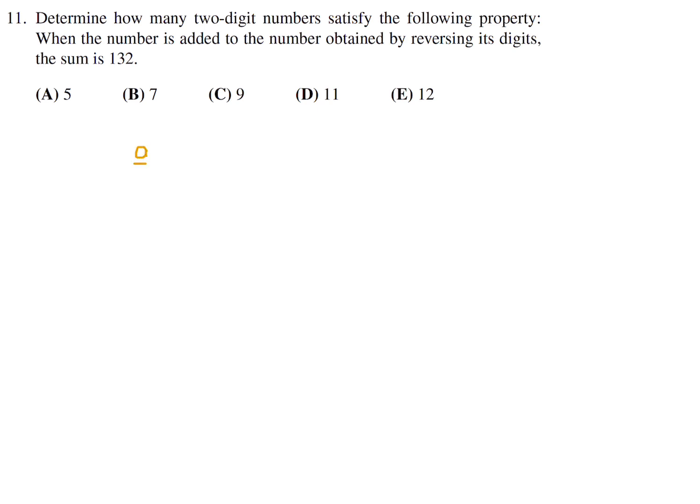We have a number of the form AB, and when you reverse the digits, the number will be BA. AB is actually 10A plus B. For example, if you had 52, 52 is actually 5 times 10 plus 2, which is 50 plus 2, which is 52. Similarly, BA is 10B plus A.